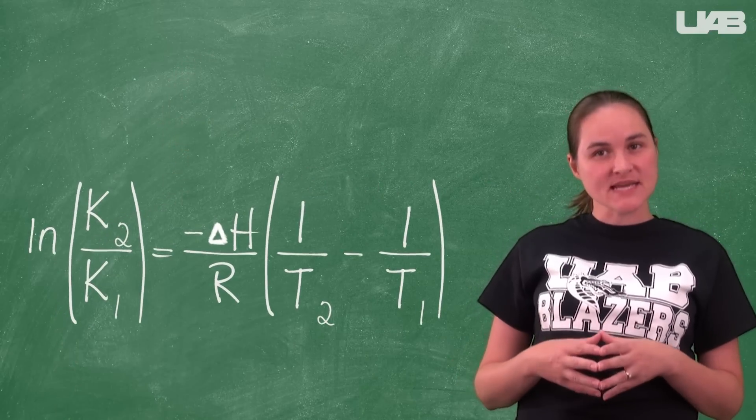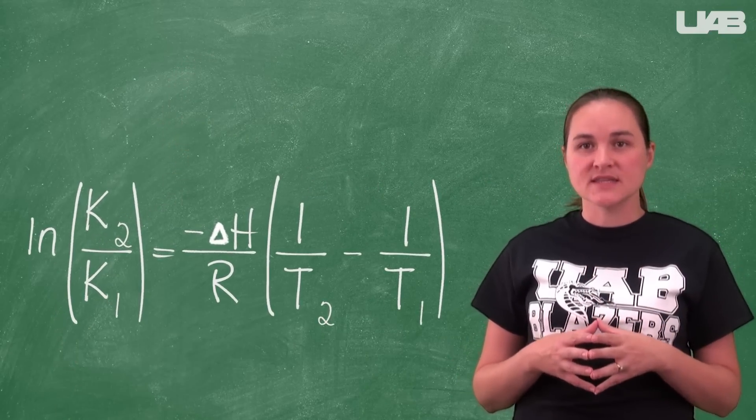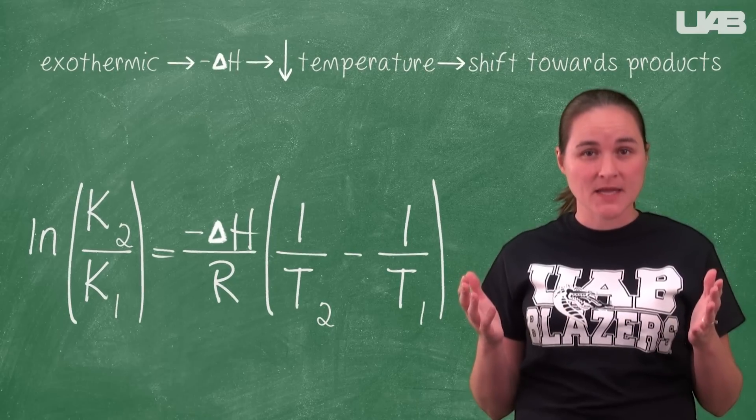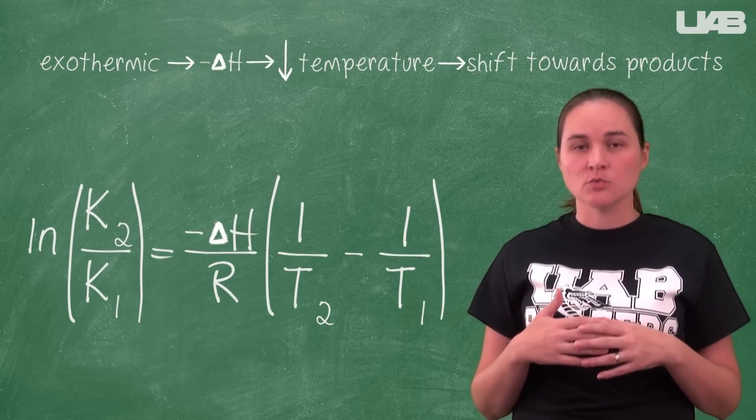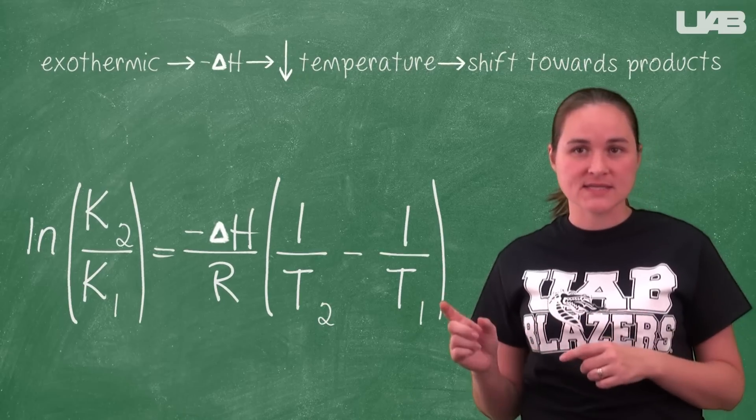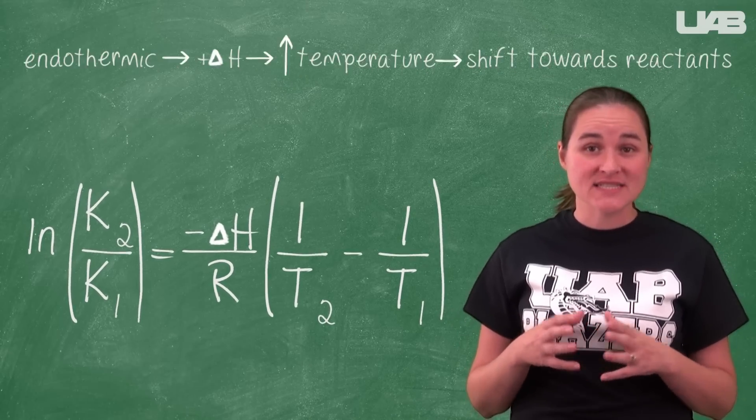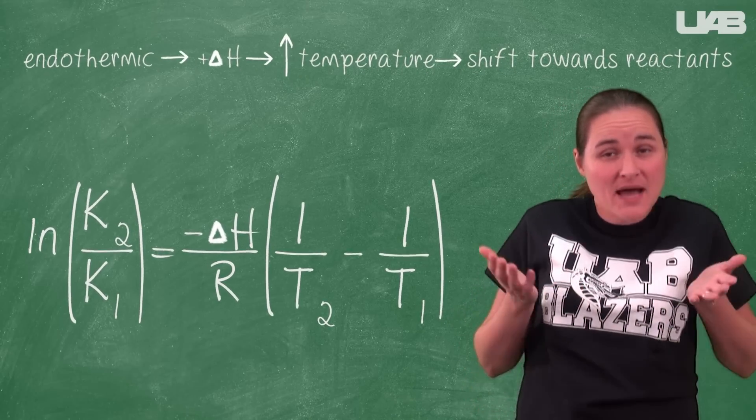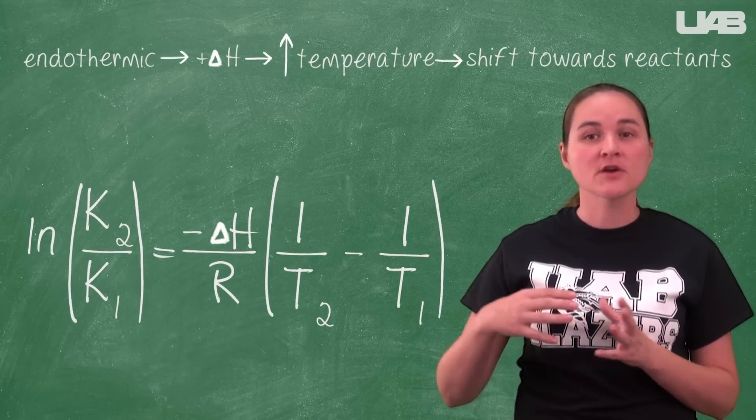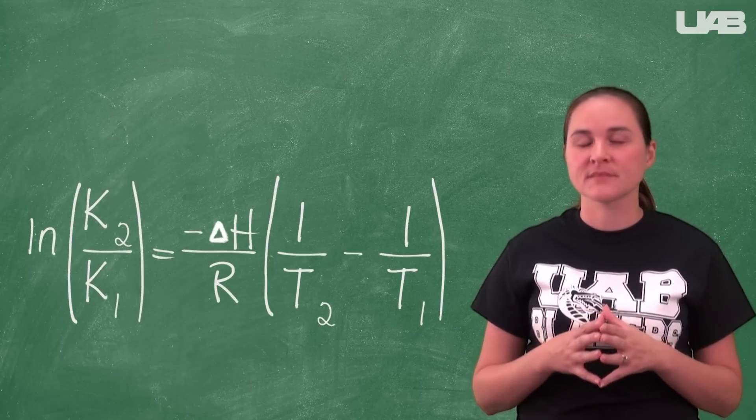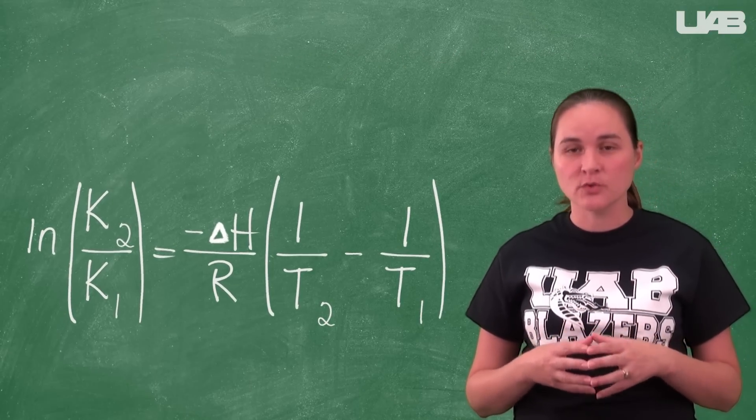If you plug some test numbers into this equation here, you can see that if the reaction is exothermic, meaning it has a negative delta H, that lowering the temperature will result in a shift towards the product side. If a reaction is endothermic or it has a positive delta H, lowering the temperature will result in a shift towards the product side. The opposite of this is true when you raise the temperature.